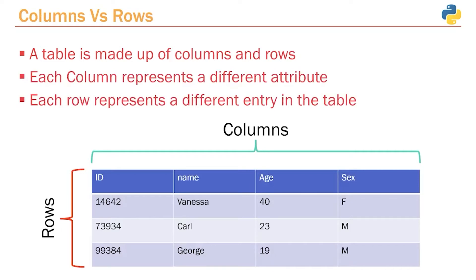When it comes to tables, we have columns and we have rows. A column represents a different attribute. If we're building a table for users, we would create a column for the name, a column for their age, their gender, the email they used to sign up, and a column for their billing or shipping address. It's up to you to figure out what attributes you need to model a specific user. Then we have rows — each row represents a different entry in the table. In a users table, each row represents a unique user: row one is Vanessa, row two is Carl.